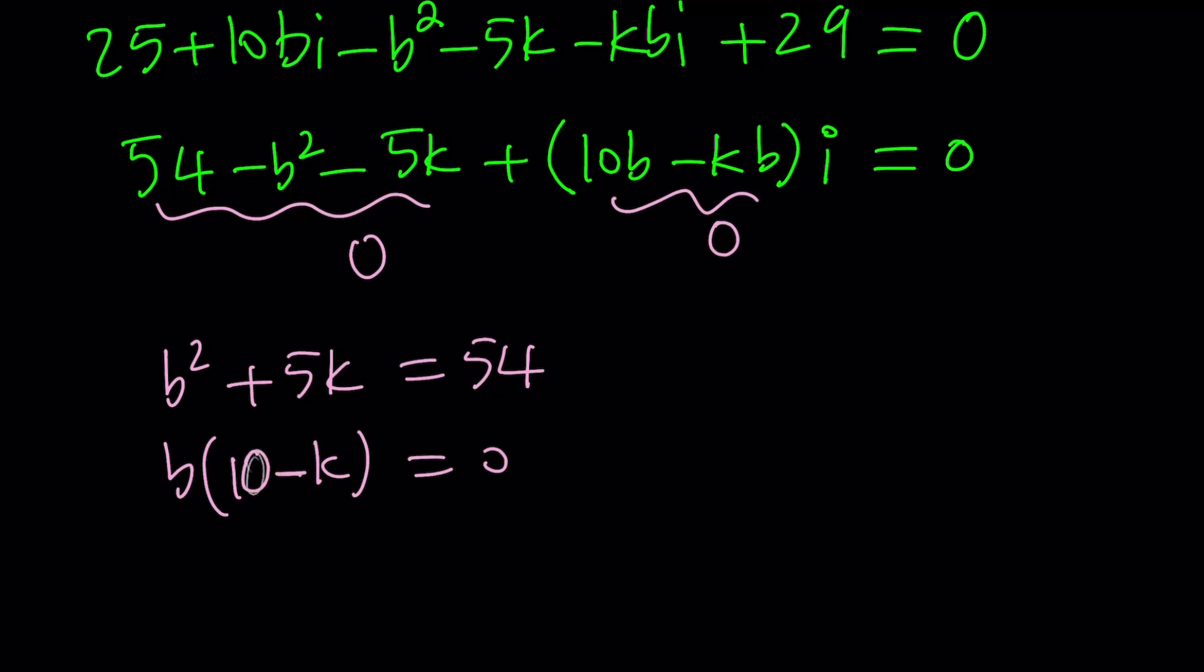And I just factor out the b. And this basically gives me two equations, which is a system. And then if you look at the second equation, it's obviously easier to solve. So from here we get b equals 0 or k equals 10.